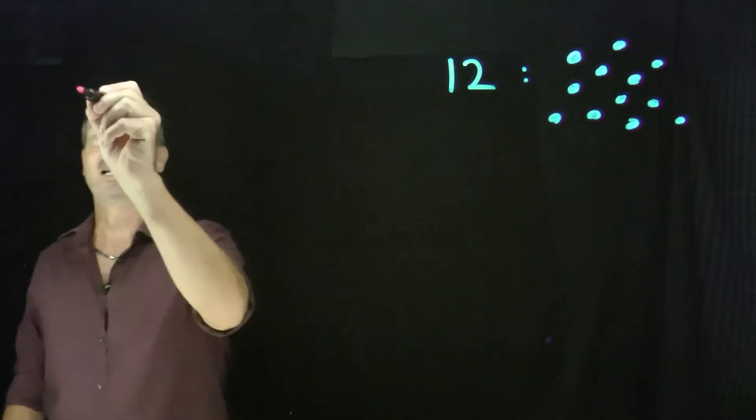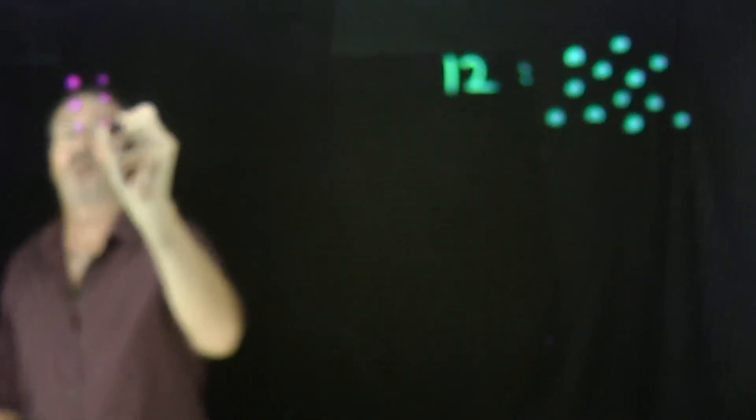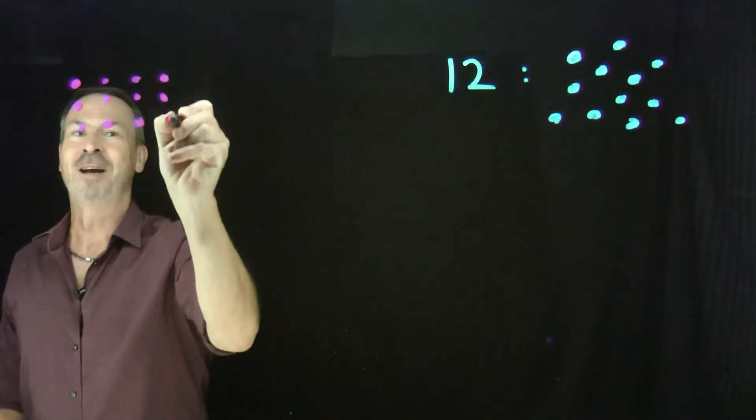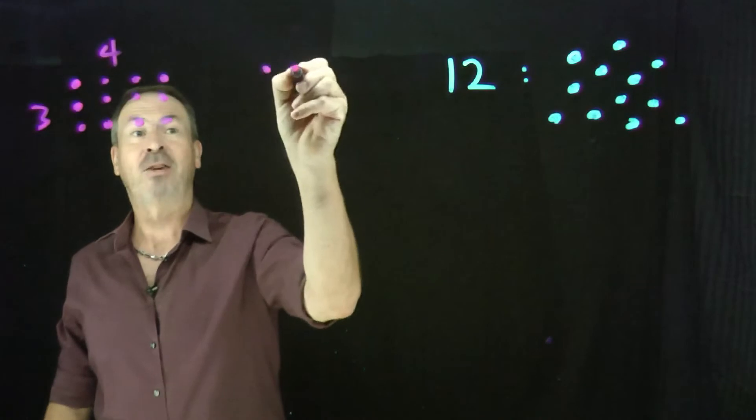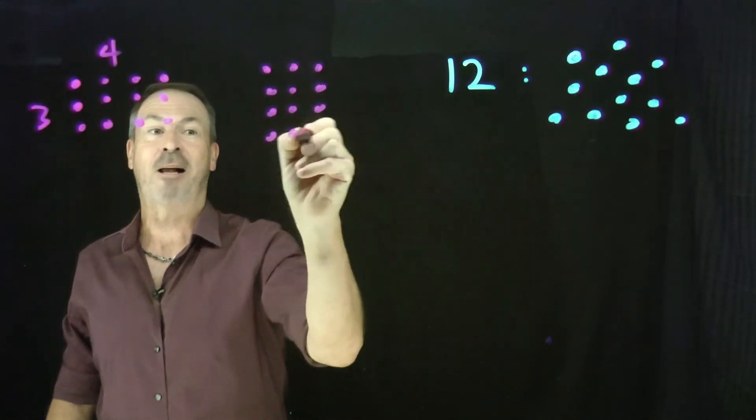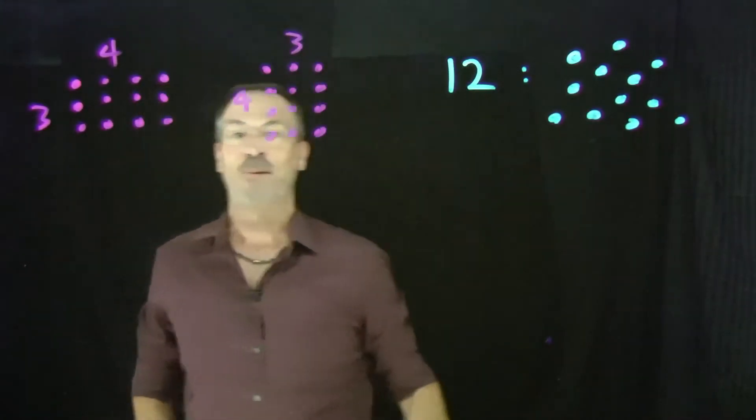For example, I can arrange these 12 dots into a 3x4 rectangle. That would be all 12. Lovely! There's a lovely 3x4 rectangle of dots with the count of 12. I can also do a 4x3, so turn around 90 degrees and there's another rectangle I can make with 12 dots, a 4x3 rectangle.